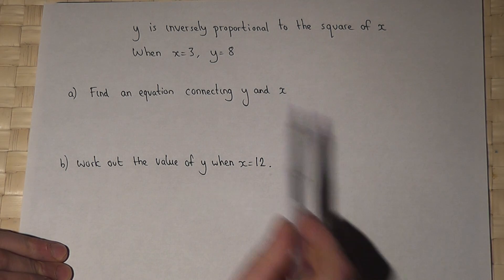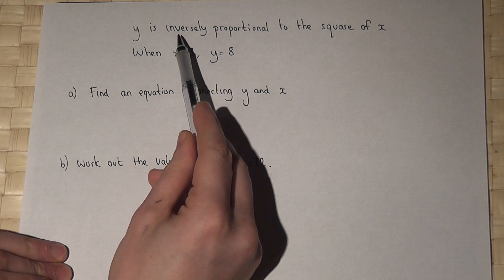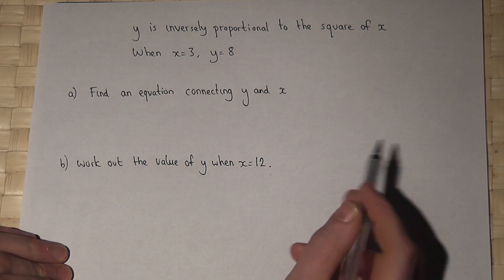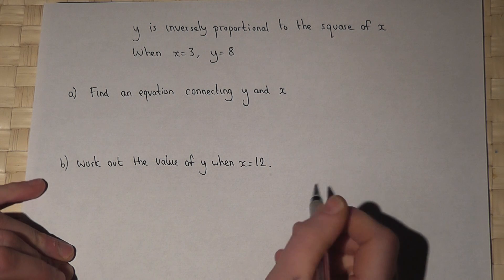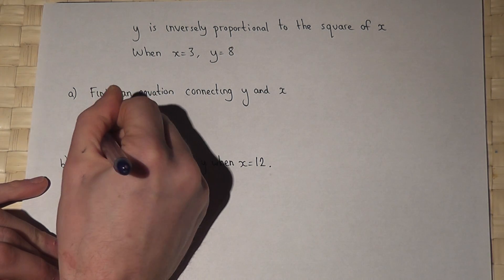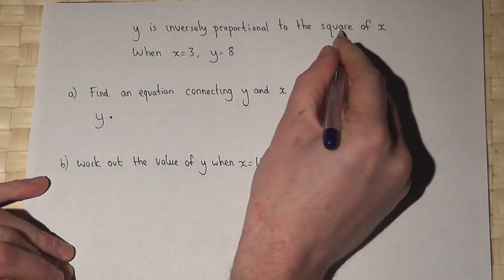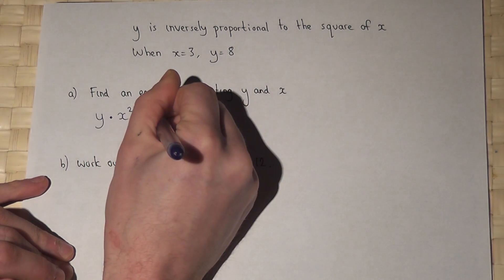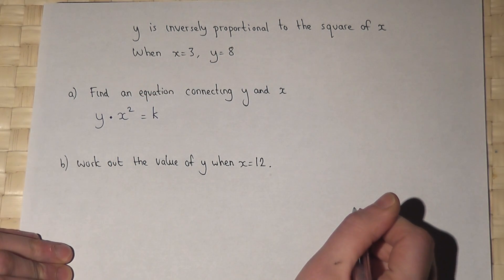In this question we're told that y is inversely proportional to the square of x. What this means is that if I do y times by the square of x, x squared, it will equal some fixed constant we'll call k.